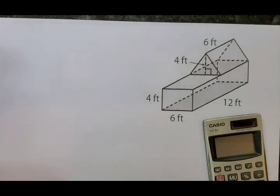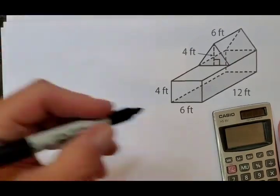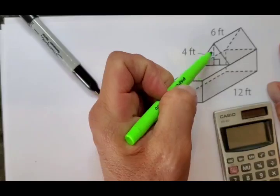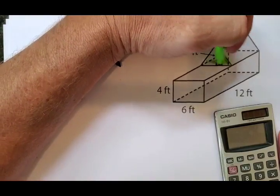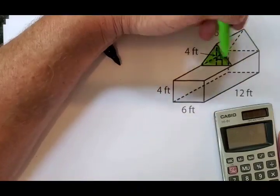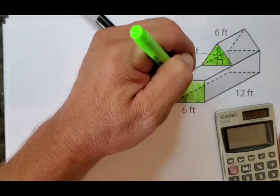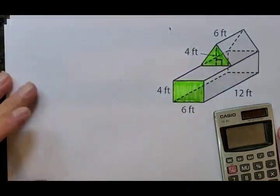I'm going to be neat, label things, and be organized — at least that's the plan. Looking at this three-dimensional figure, we have a couple of things going on. This top figure is pretty clearly a triangular prism. So we have a triangular prism up here, and then attached to it down below, we have the rectangular prism. We need to start thinking about volume — we're dealing with space inside.